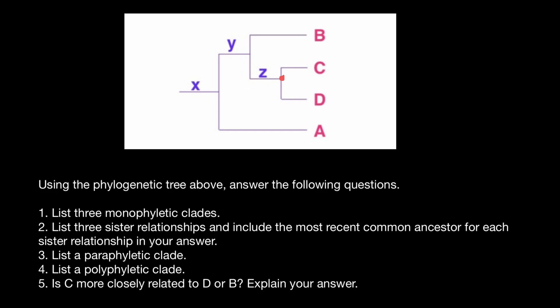So for taxa D, the sister group is going to be taxa C. And for the clade which is here, the sister group is going to be B.